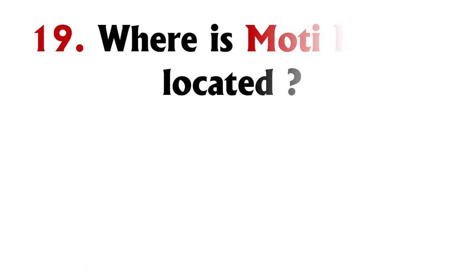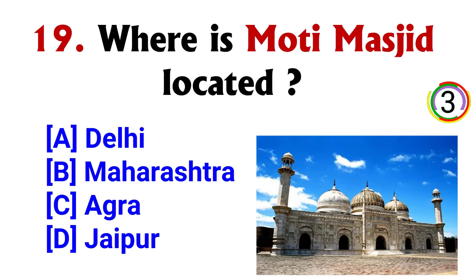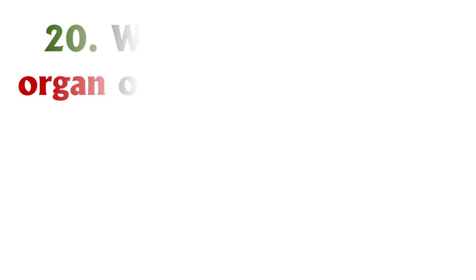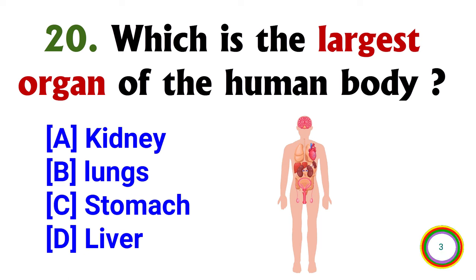Where is Moti Masjid located? Option D, Agra. Which is the largest organ of the human body? Option D, liver.